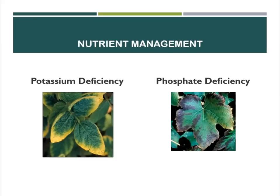The potassium deficiency has yellowing of the tips and edges of its leaves. The phosphate deficiency has a darker hue of its leaves and loses its leaves in the process.